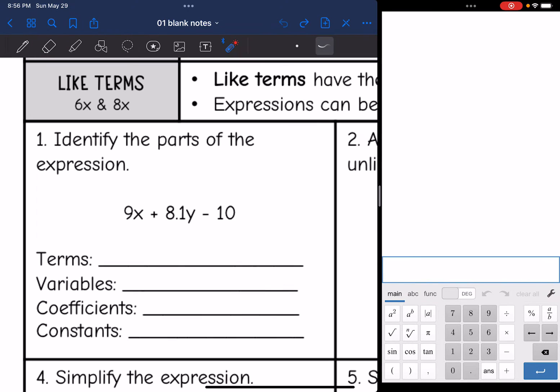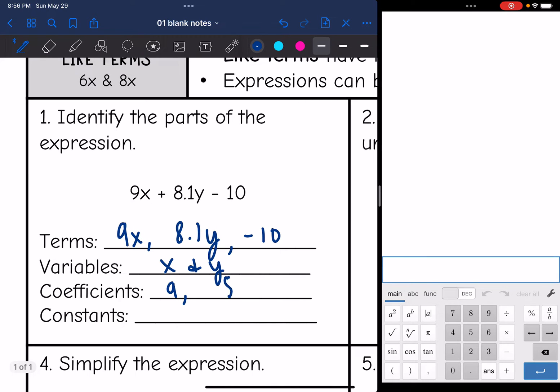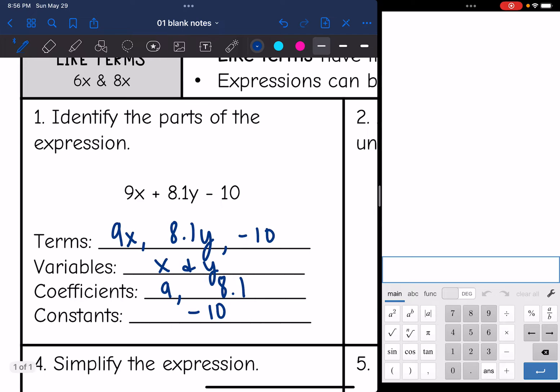Let's identify the parts of the expression here. So our terms would be 9X, 8.1Y, and negative 10. Just everything that is separated by the addition and subtraction sign. The variables would be X and Y, those unknown quantities. And the coefficients are the numbers in front of the variables. So 9 in the 9X and the 8.1 in the 8.1Y. And then the constant here would be negative 10, since that is the number by itself.